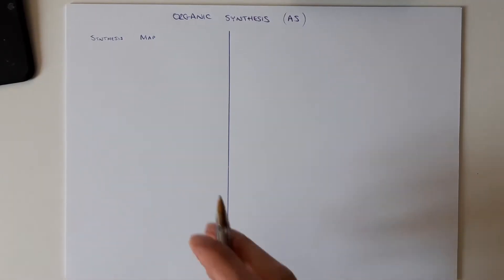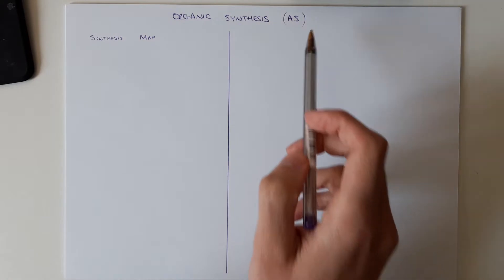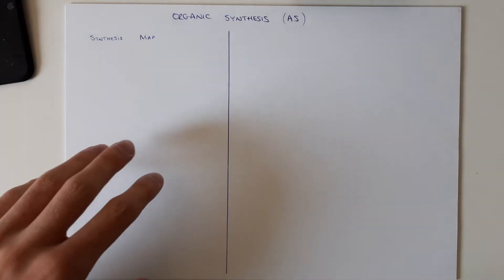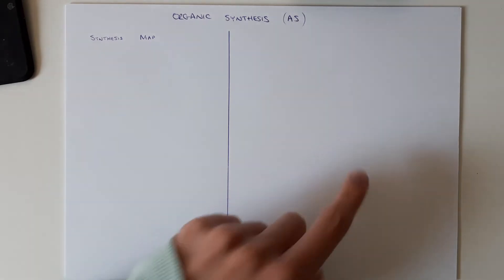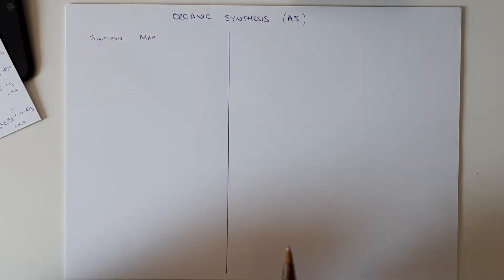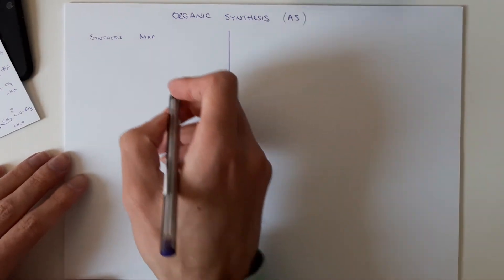So in this video I'm going to be recapping organic synthesis just for the AS topics. I'm going to be drawing a synthesis map on the left hand side, on the right hand side I'll be going through some of the mechanisms and the equations. In a synthesis map we're going to show our routes between functional groups and include the reactants and the conditions when necessary.